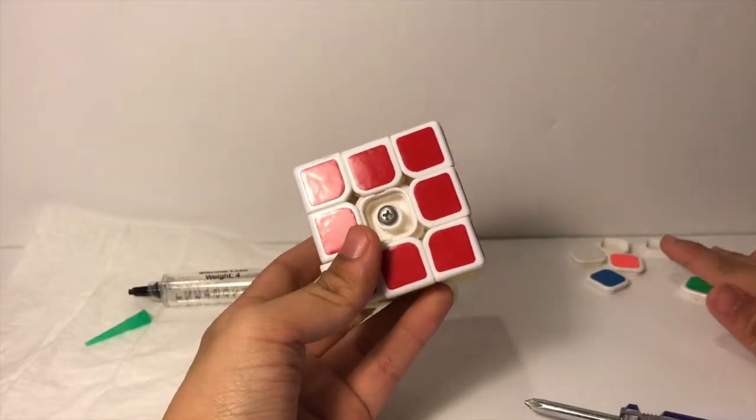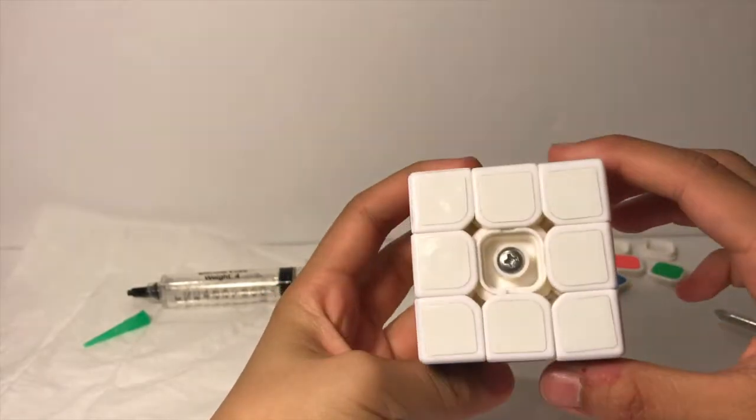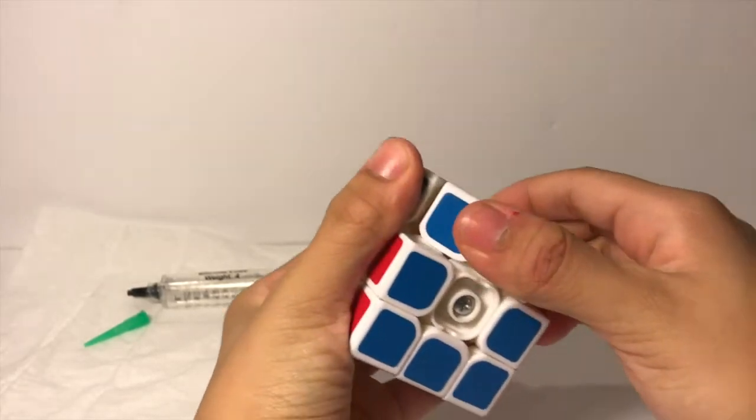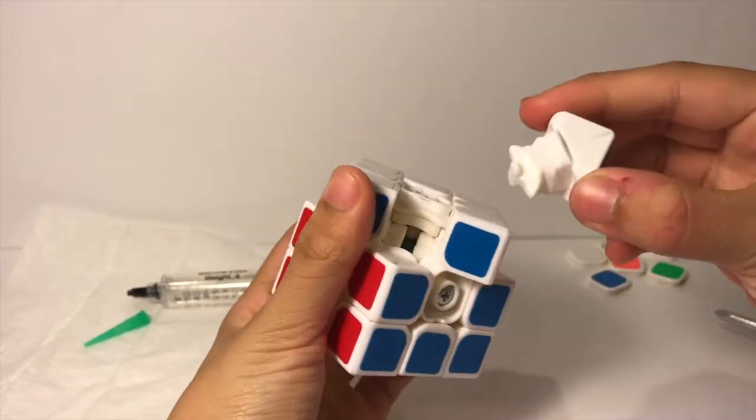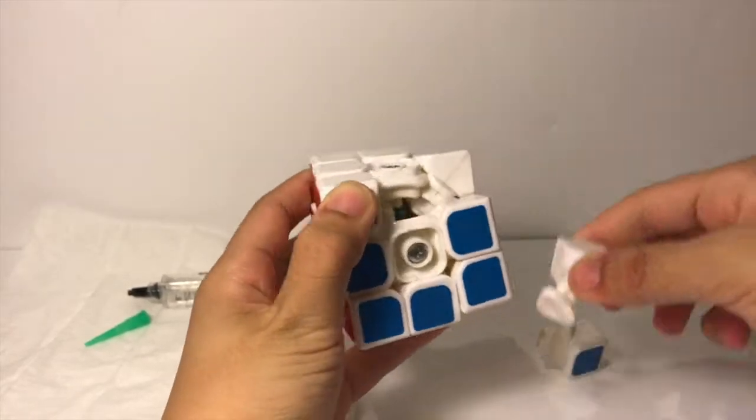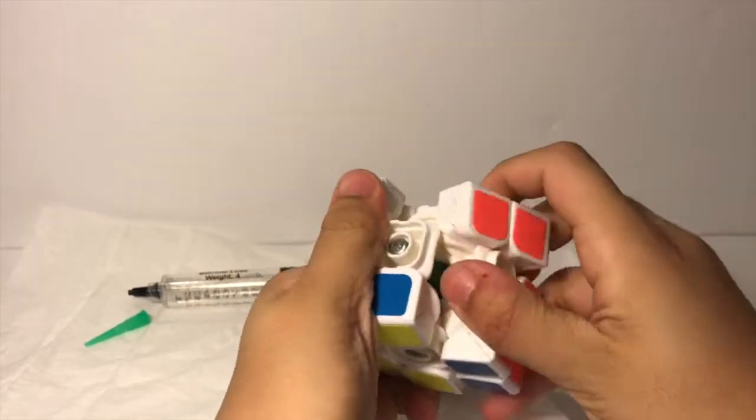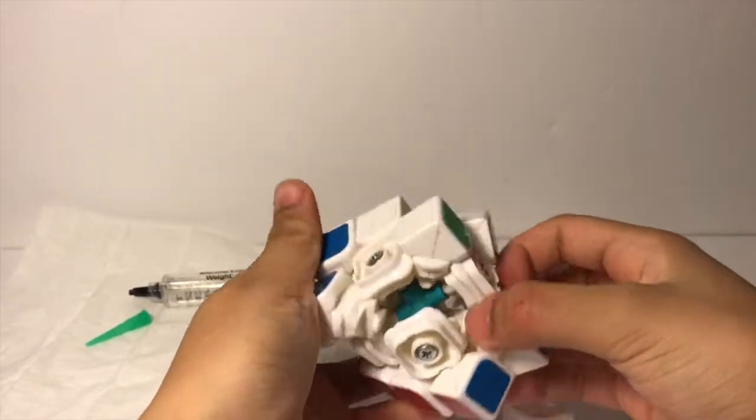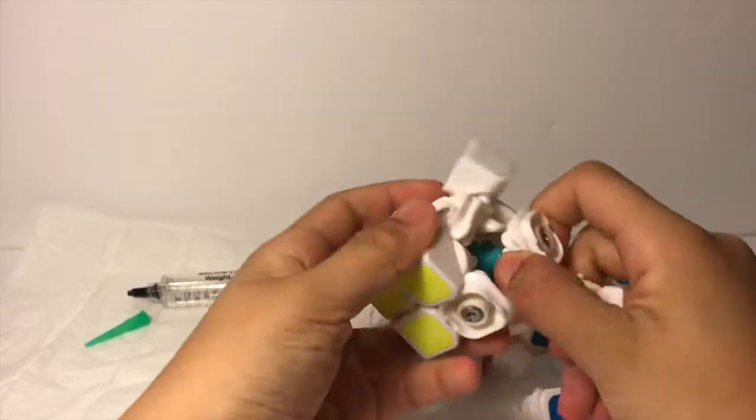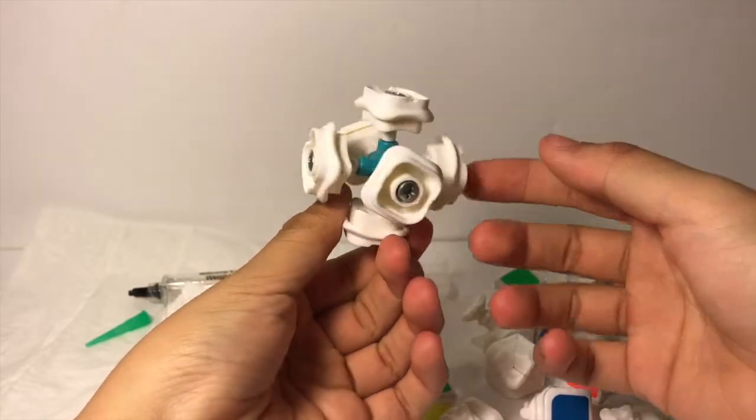Modern day speed cubes now all have removable caps, so you can take it off from this little gap, and you just want to do that for every side. Now put all your caps aside, make sure you don't lose these, and you can begin to take your cube apart.